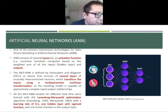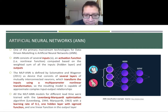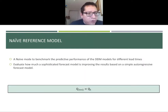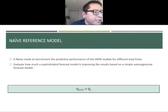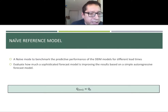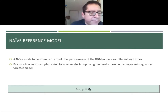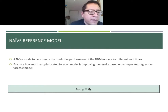In this study, we want to predict discharge in order to forecast flood conditions for different lead times. We also wanted to evaluate how much the artificial neural network modeling technique improves results based on a simpler model. We used a naive reference model to benchmark the predicted performance — a basic parameterless model where the predicted discharge for a given lead time is assumed equal to the current discharge.